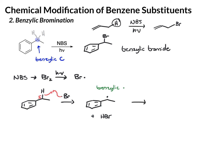From there, this can react with Br2 that's in the solution. And this radical will come and take a bromine atom. That gives you the benzylic bromide, plus we get another bromine atom that can continue this propagation. So that's the basic mechanism that's happening there.